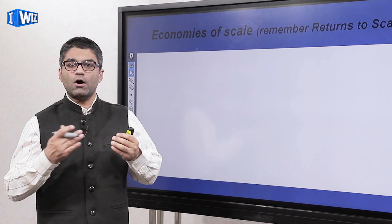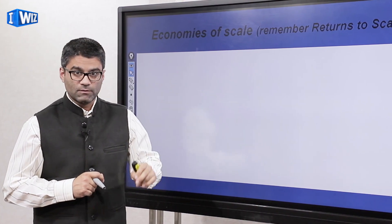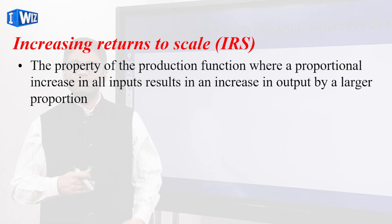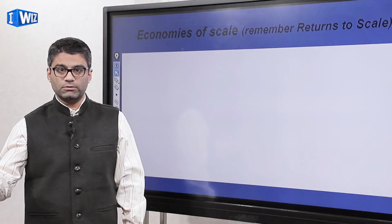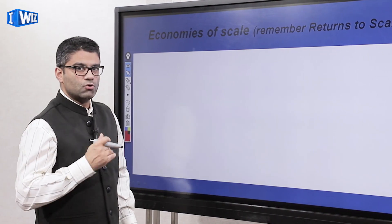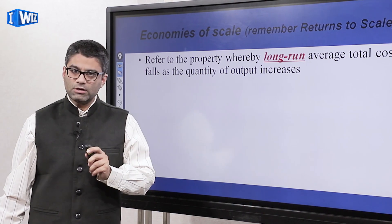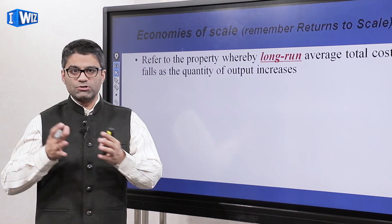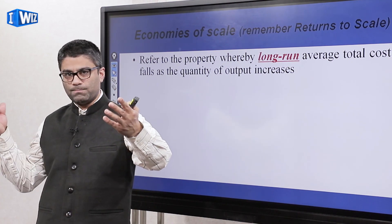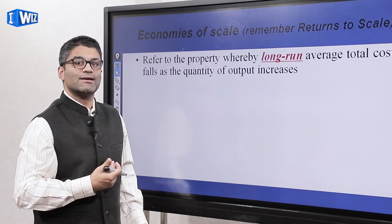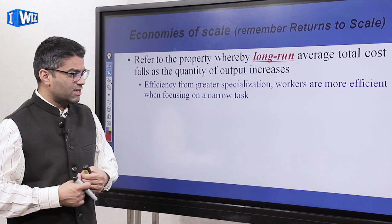Economies of scale is related to what we talked about earlier on returns to scale. When we talk about increasing returns to scale, as a firm hires more inputs they are being more productive — output goes up by a larger proportion. Economies of scale says that the long run average total cost will decline as the quantity of output increases. This happens because your inputs are being more productive, so if you hire more people and they're more productive while you pay them the same, your average total cost declines.